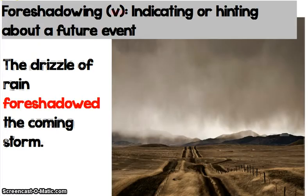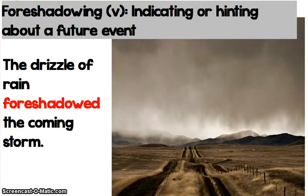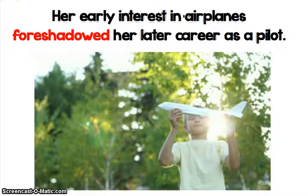Our final word is foreshadowing. Foreshadowing is a verb that means indicating or hinting about a future event. We've talked about foreshadowing many times in ELA class because it is a literary element — a technique authors use to drop hints about what's going to happen later in a story. But it's not just something you apply to literature. You could talk about things in life that foreshadow other things. Like: the drizzle of rain foreshadowed the coming storm — I knew the storm was coming because of the rain. Her early interest in airplanes foreshadowed her later career as a pilot. So foreshadowing is the hint that helps you predict what's going to happen in the future.